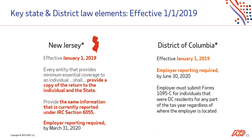Next, let's look at Washington D.C. The District of Columbia has also outlined a number of requirements. Similar to New Jersey, Forms 1095-C for individuals that were D.C. residents for any part of the tax year are required regardless of where the employer is located. The due date for D.C.'s employer reporting is currently set for June 30, 2020. Should there be any updates, we will continue to monitor them and let you know. Like New Jersey and the IRS, forms will be transmitted to the D.C. Office of Tax and Revenue via the same system employers use to file Form W-2.